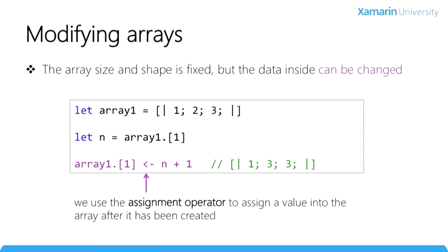Arrays in F-Sharp are fixed in size and shape, just like C-Sharp. To resize the array you must recreate it and copy all the values over. However, unlike most data structures in F-Sharp, the data in the array itself is mutable. You can use the assignment operator — the less-than followed by the dash — to alter a value by index position, as you can see here, where we change the second item to a new value.